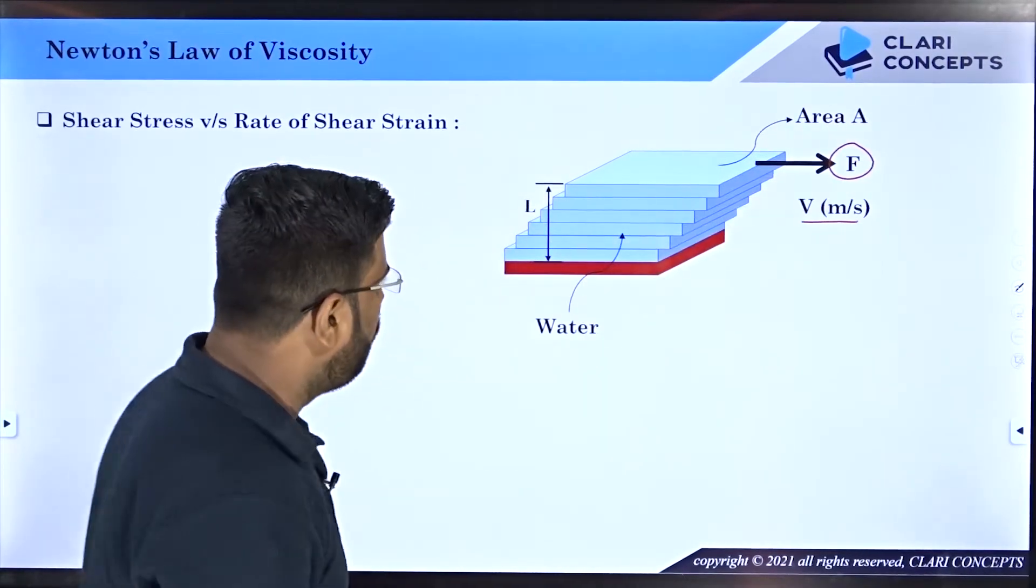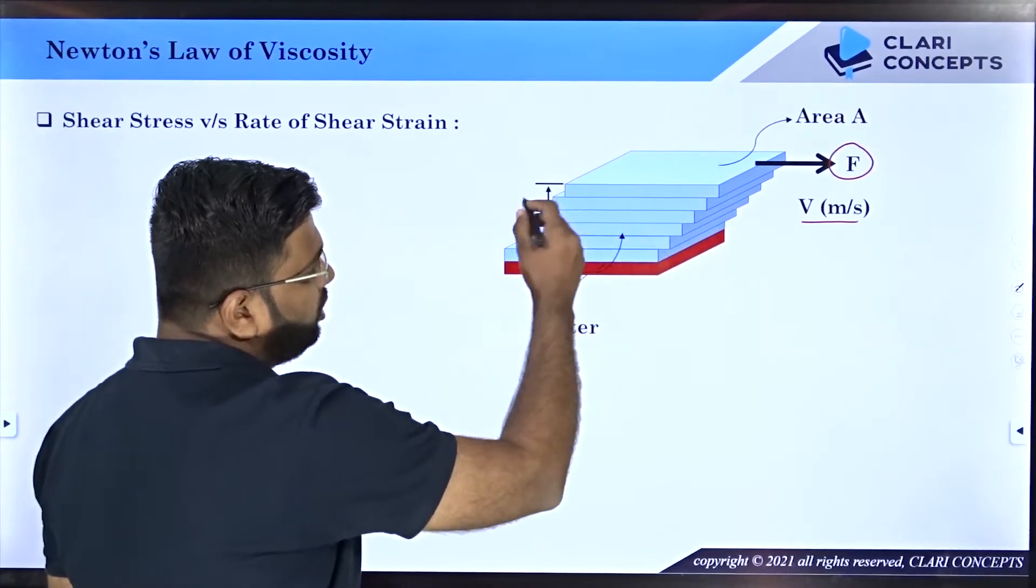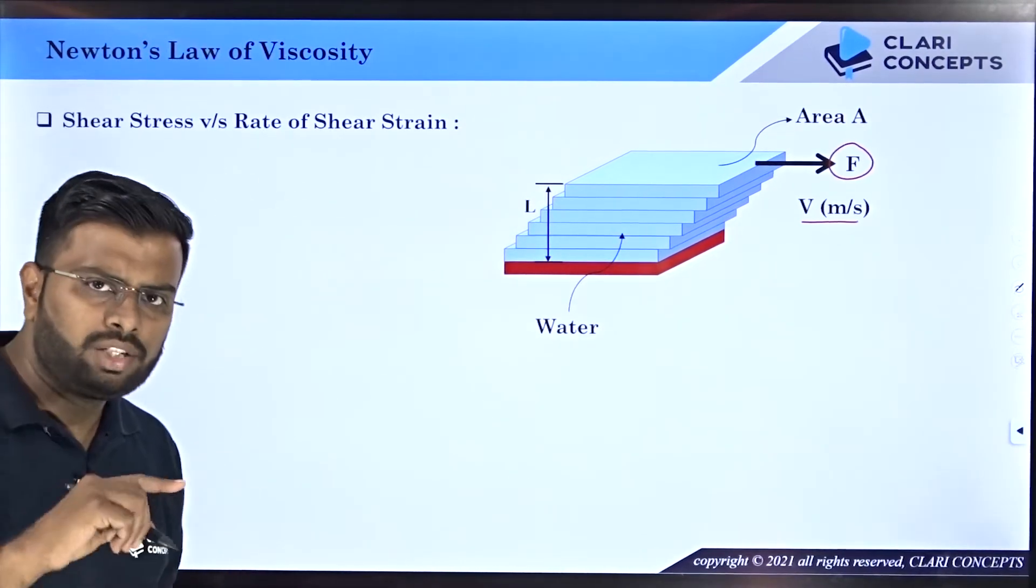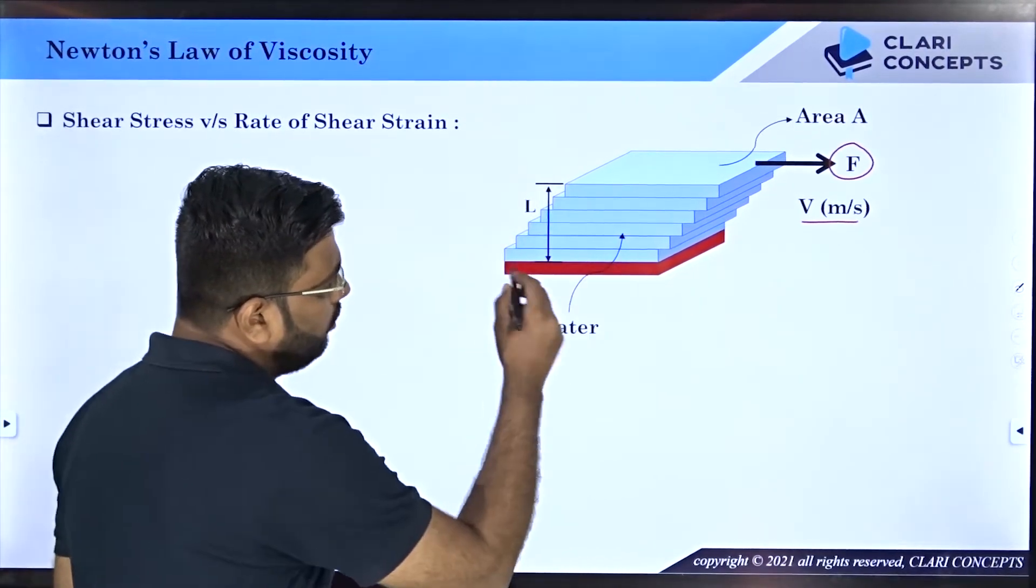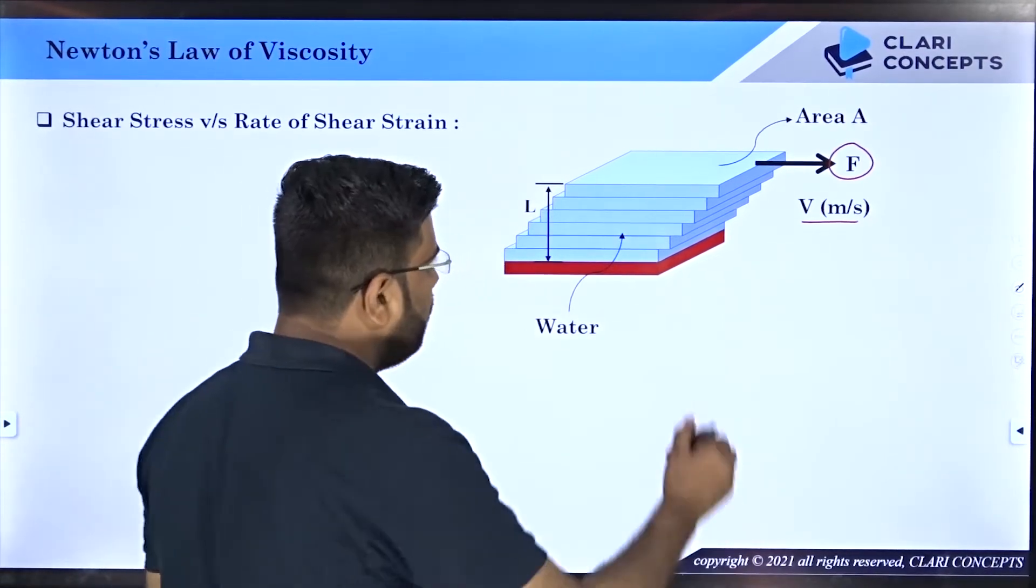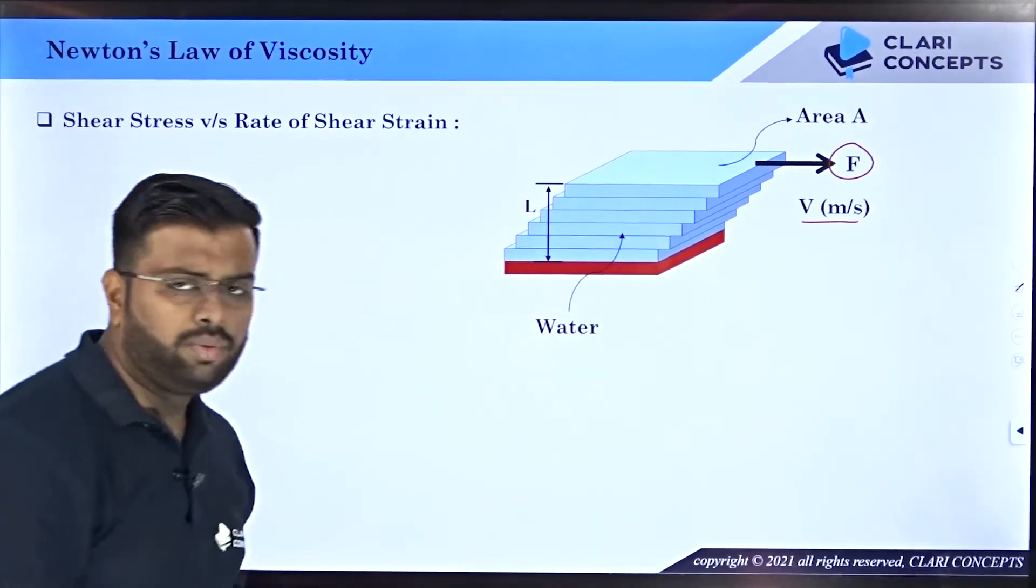Now in this case, the topmost layer of the fluid has the highest velocity, and the bottommost layer of the fluid has zero velocity. All the intermediate layers have velocity between zero and V.